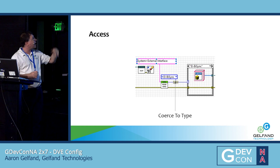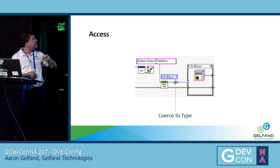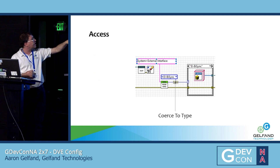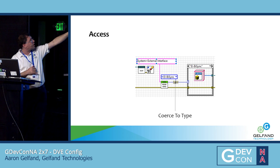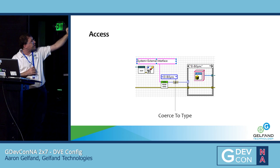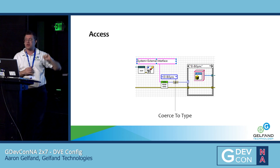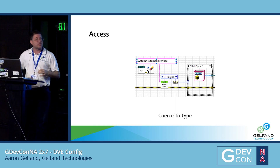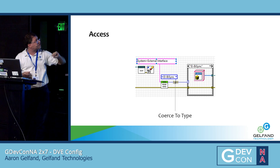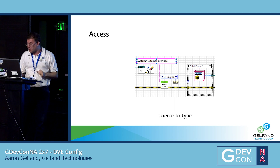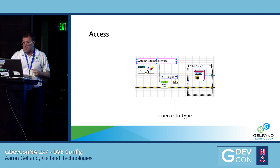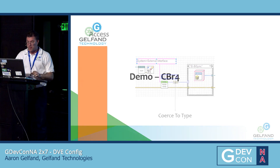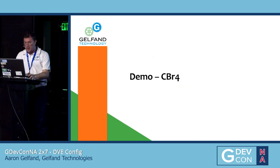For accessing, I have read VIs — in this case, I have read ring control and the read ring data type, and I'm reading system external interface. I'm using coerce-to-type to turn that into an enum to make my case statement easier. For the case statement, I'm selecting between different classes — classic factory pattern. So now I'm going to go into my demo.